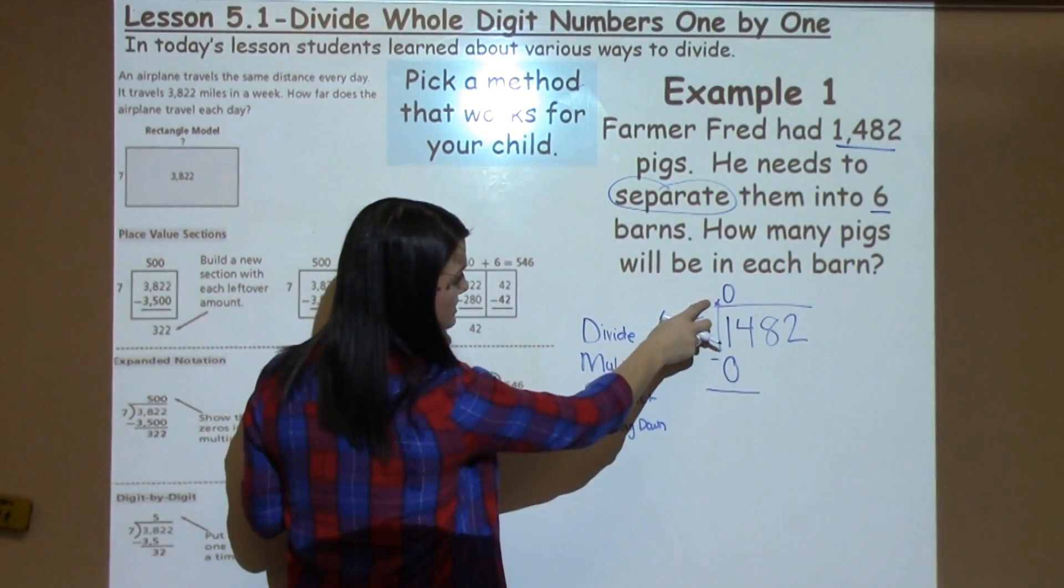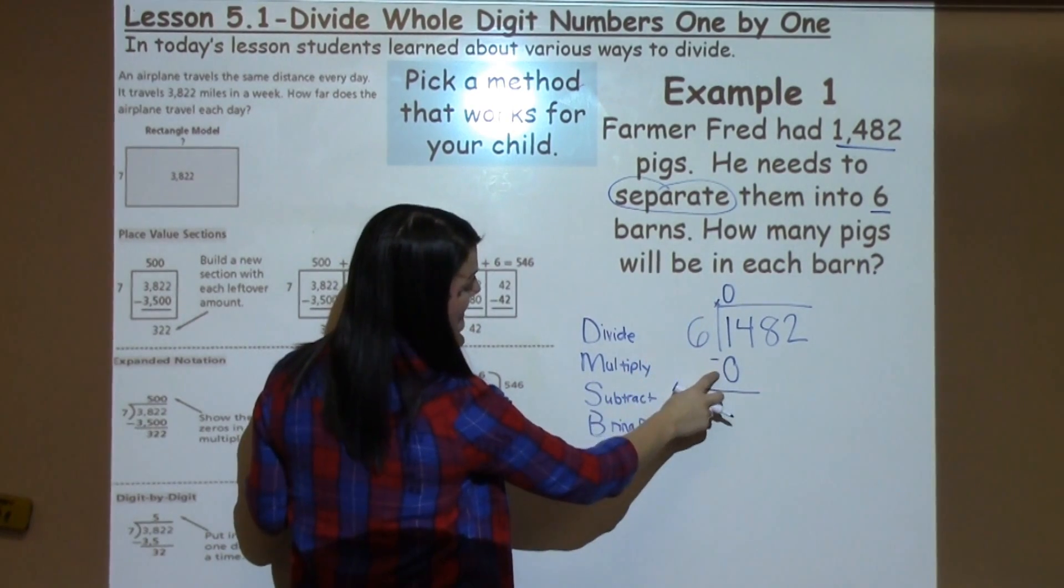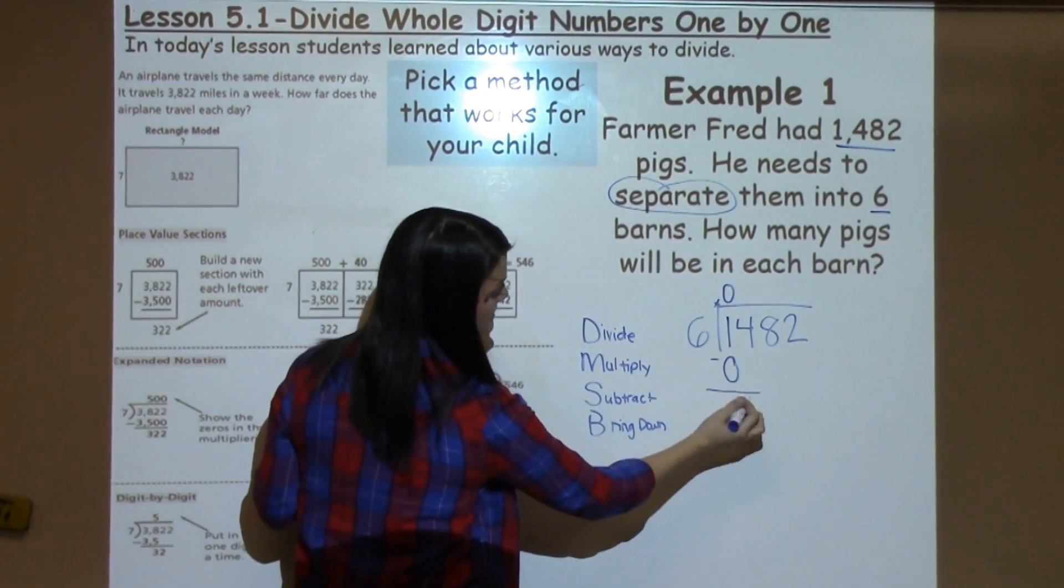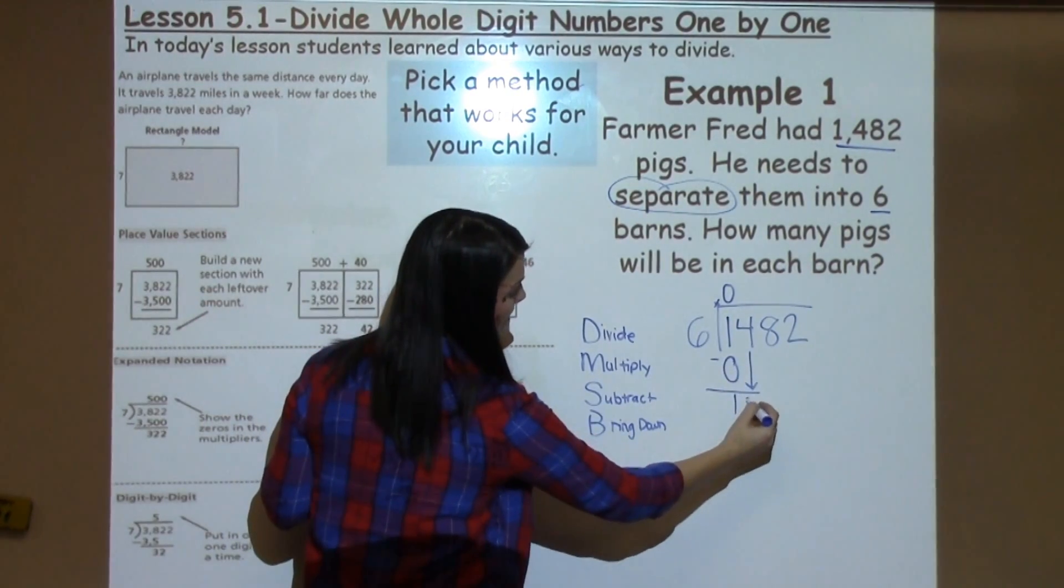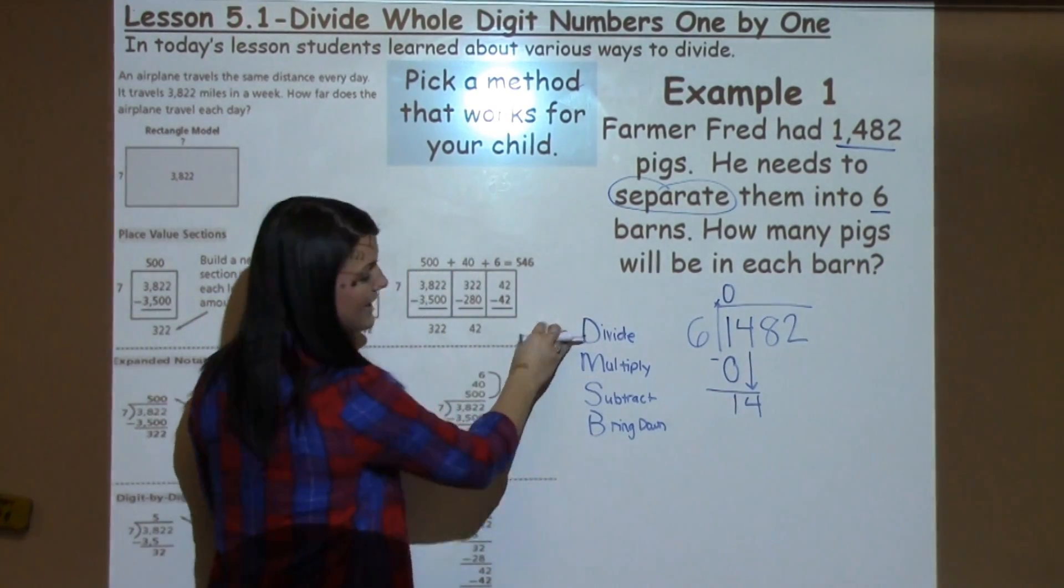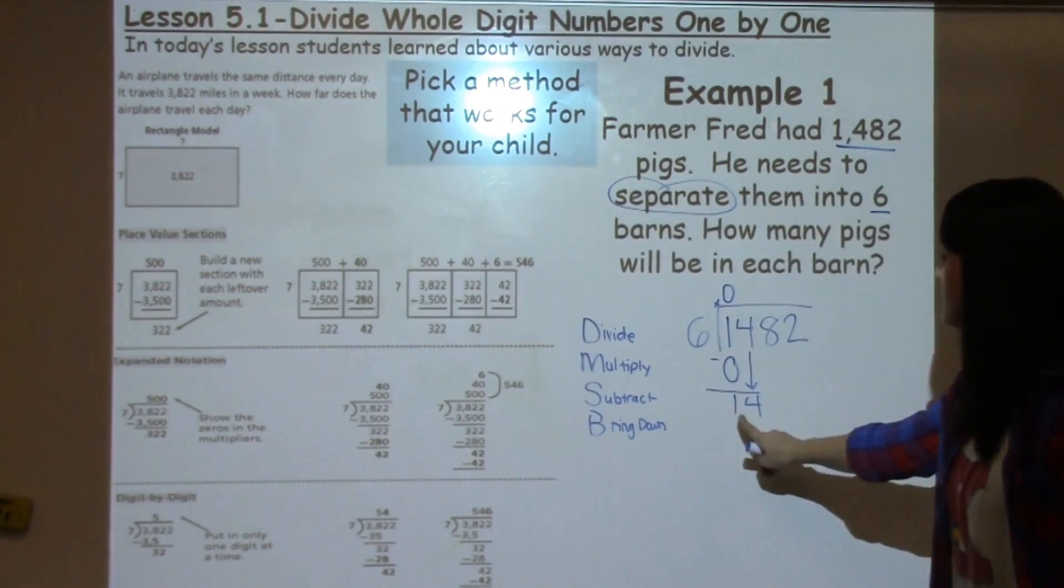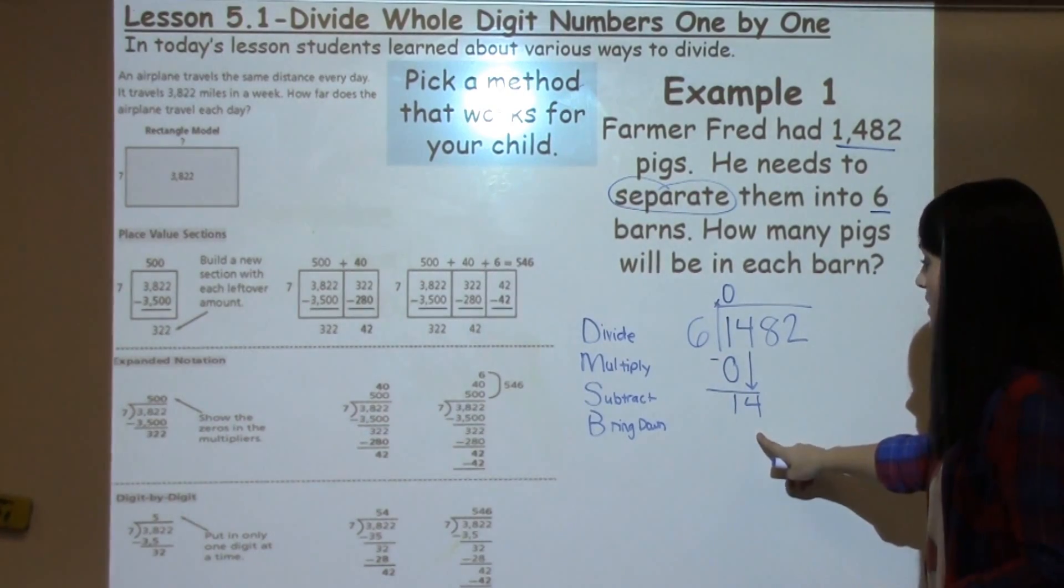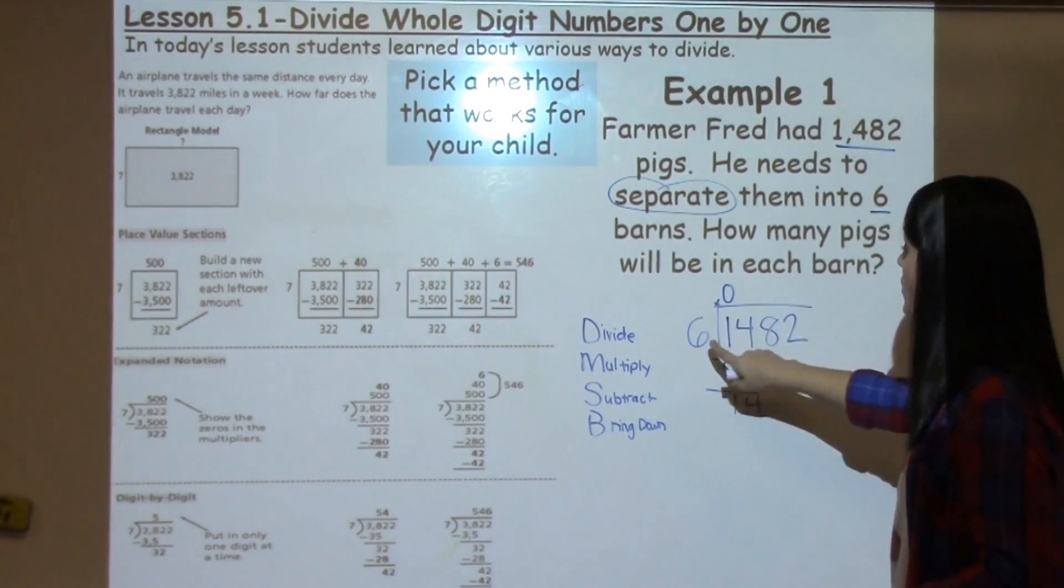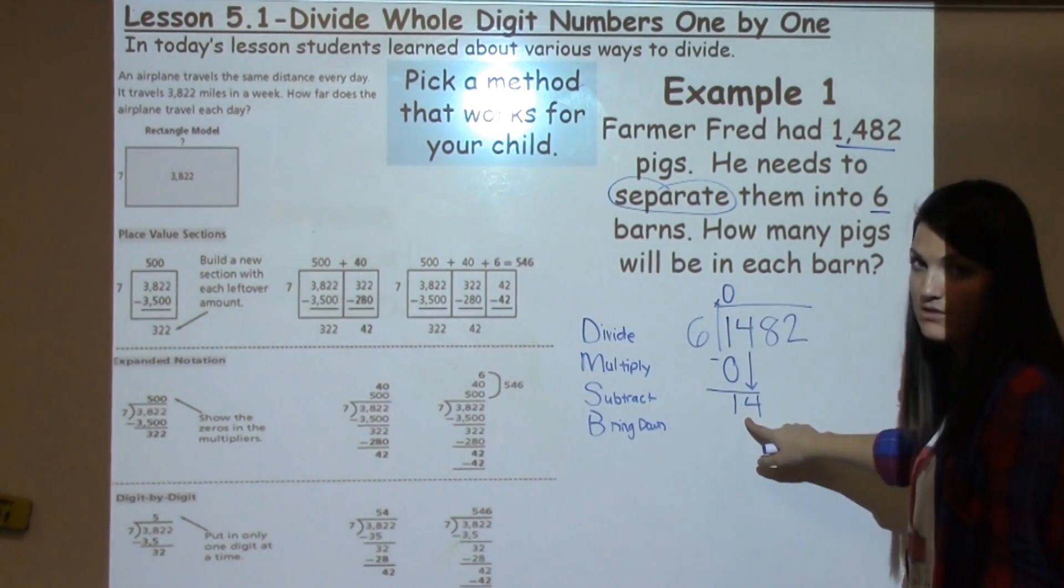So I have done my division and multiplication, and now I need to subtract. 1 minus 0 is 1. My next step is to bring down. Now I go back to the beginning and I do it all again. So I think to myself, 6 goes into 14 how many times without going over?